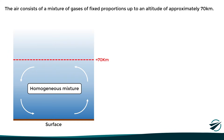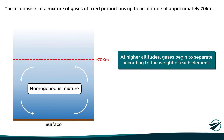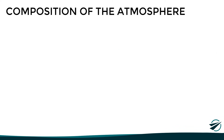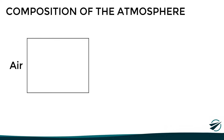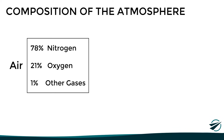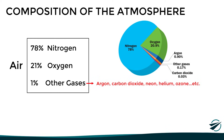Above this level, the atmospheric circulation is not as significant, so at higher altitudes gases begin to separate due to gravity according to the weight of each element, leaving the heavier gases at the bottom and the lighter gases at the upper levels. Since air operations are carried out in the lower levels of the atmosphere, the air near the surface is composed of 78% nitrogen, 21% oxygen, and 1% of other gases such as argon, carbon dioxide, neon, helium, ozone, and others.